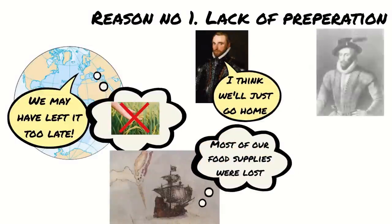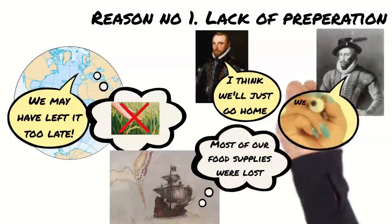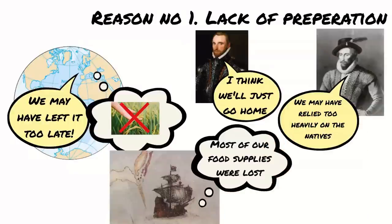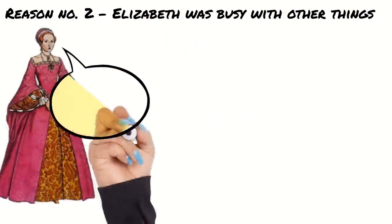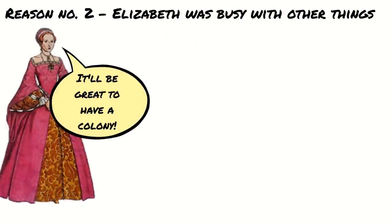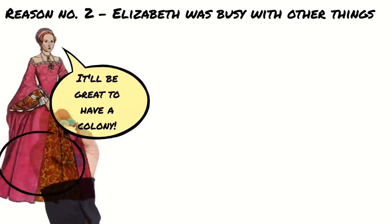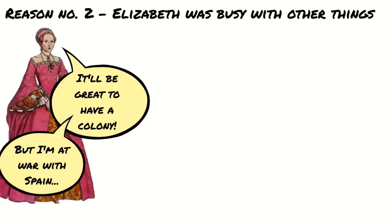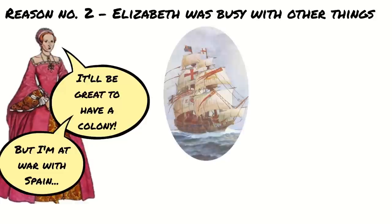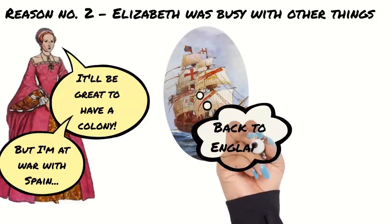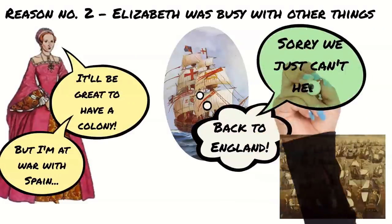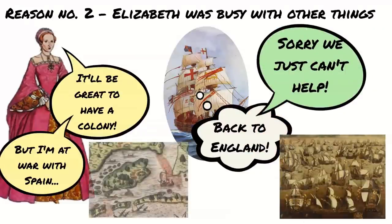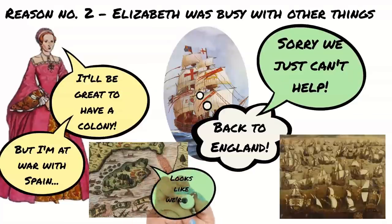It is also possible that a lack of food was a key contributor to the second colony's failure, as they were forced to become reliant on the local tribes, which led to bitterness and resentment. Elizabeth may have been excited by the idea of an English colony in North America, but by 1585 war with Spain was looking increasingly likely and she began to summon ships to support her fight against the Armada in 1588. This meant that there were fewer ships available to take replacement supplies or reinforcements of colonists, so the Roanoke colony became increasingly isolated and vulnerable.